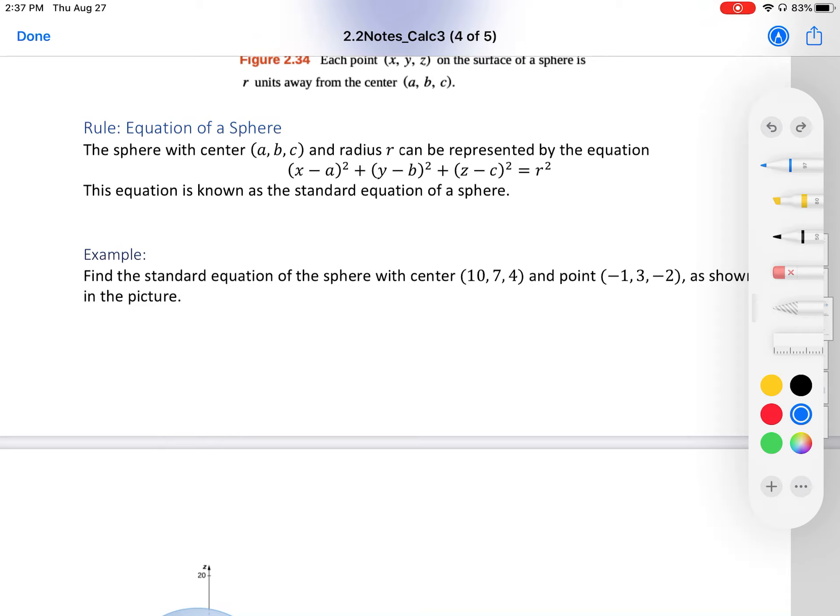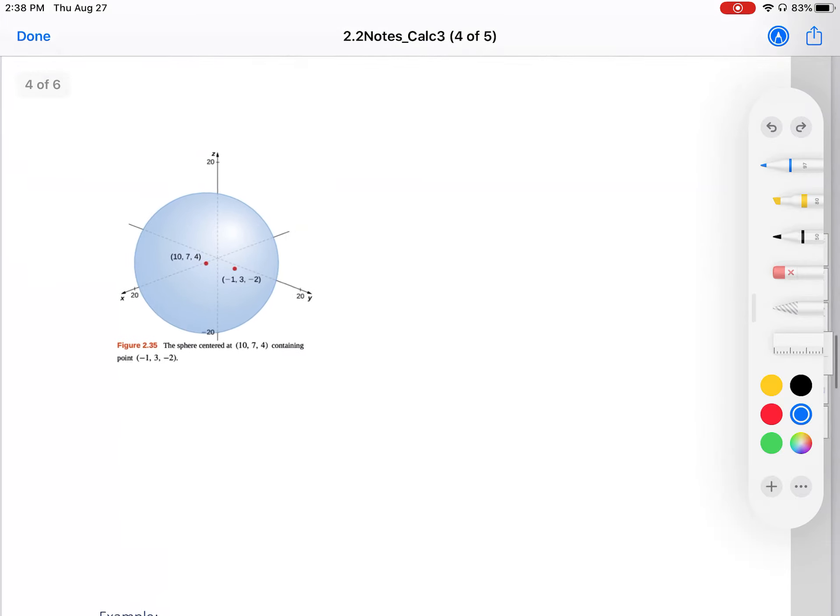An example: Find the standard equation of a sphere with center (10, 7, 4) and a point (-1, 3, -2) as shown in the picture. If I have a point on a sphere, then it would have to be at the radius. I have the center and I have a point along the sphere. Even though it looks like it's floating in between the sphere, if it's a point of the sphere, it's an endpoint in the sphere.